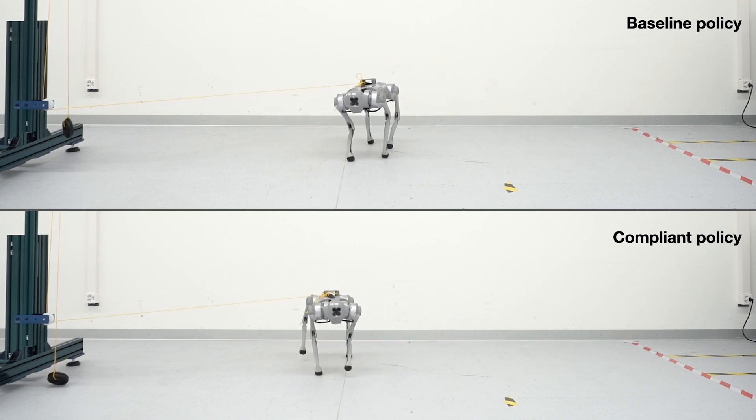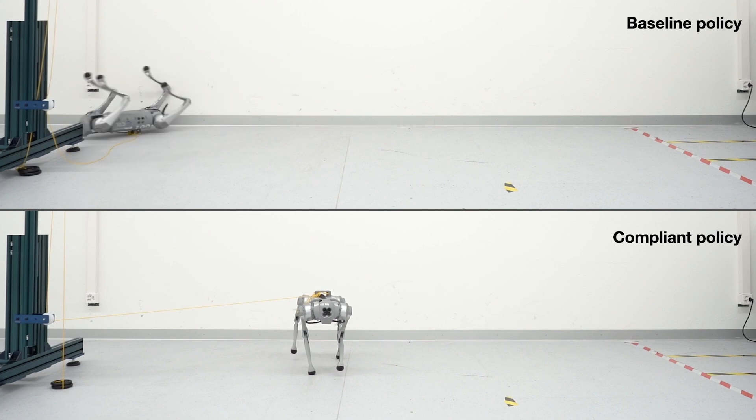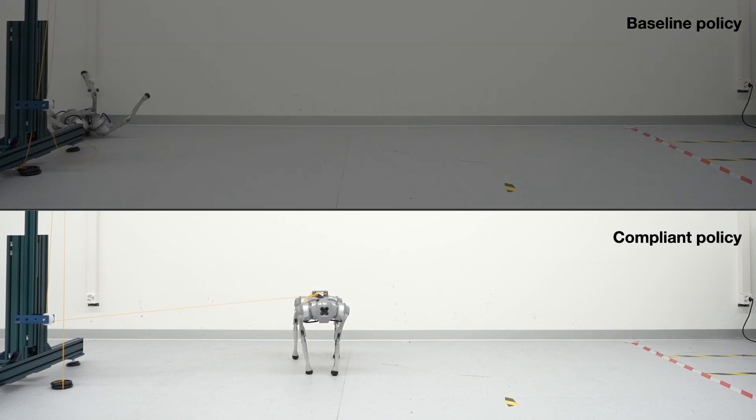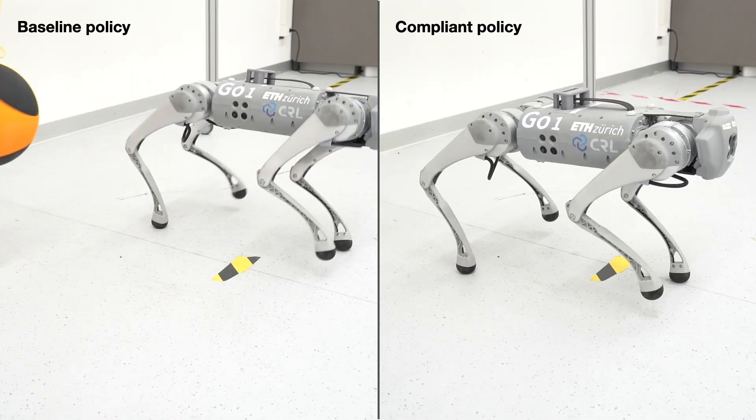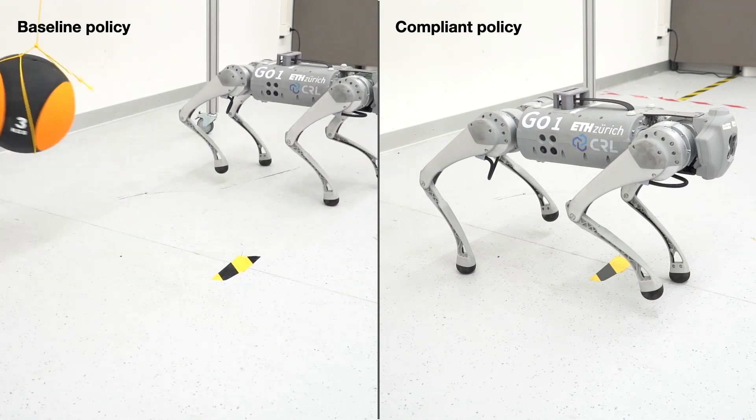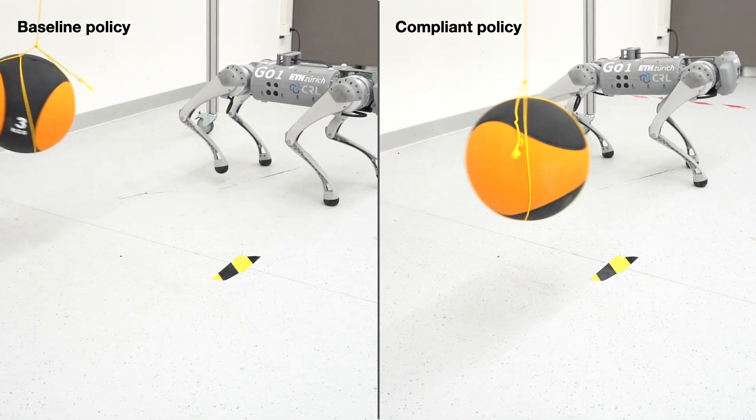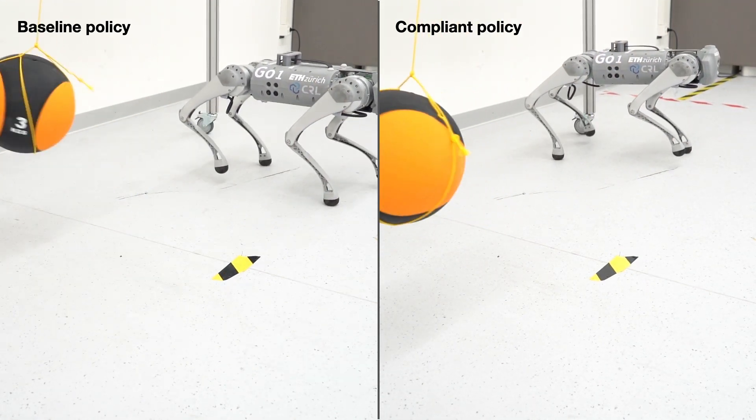Conversely, the baseline policy resisted the force, making the robot more susceptible to toppling. Moreover, the baseline policy tended to react to impulse more abruptly, whereas the compliant policy responded in a more controlled and gradual manner.